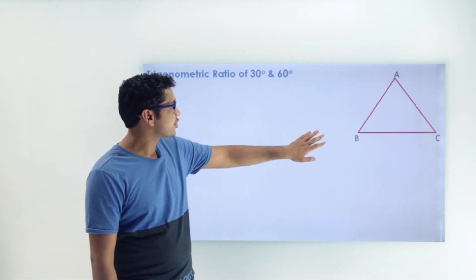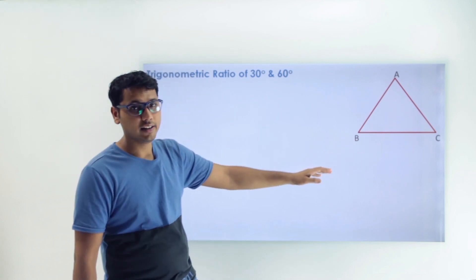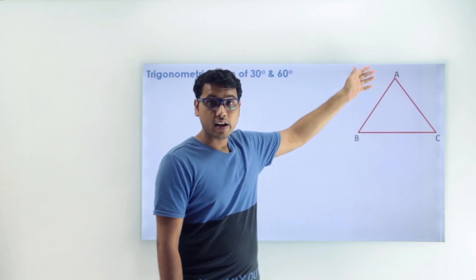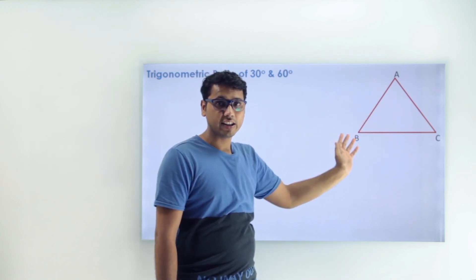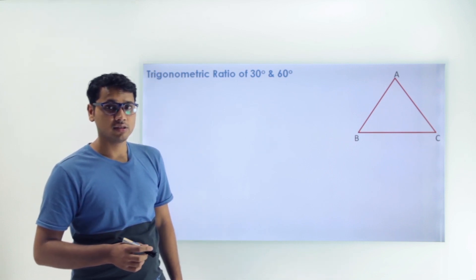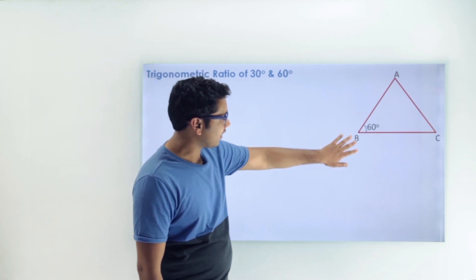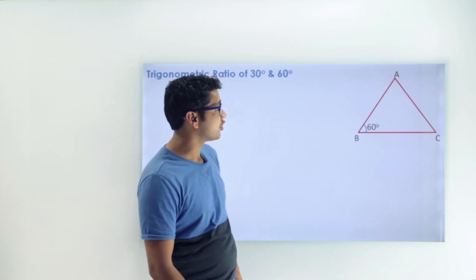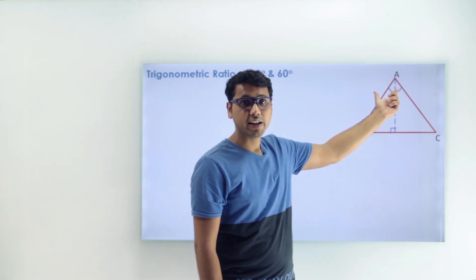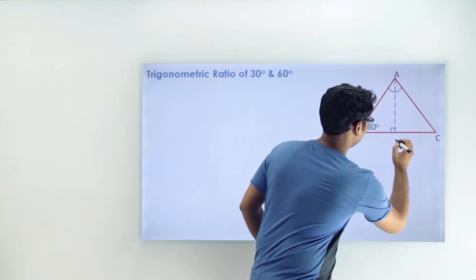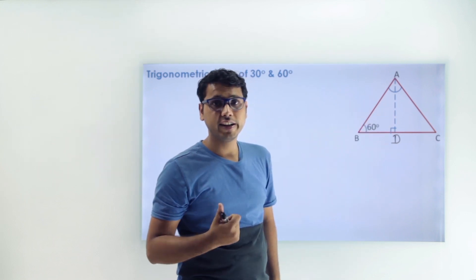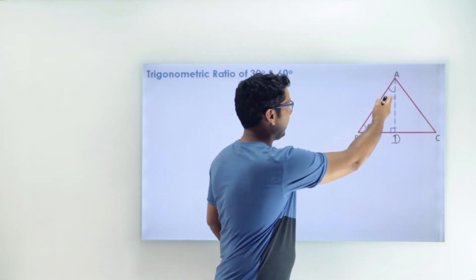In an equilateral triangle all angles are 60 degrees, and if we make a construction — a median, an angle bisector, or an altitude — it will bisect the top angle into two parts of 30 degrees and 30 degrees. So if we draw a perpendicular from A, it bisects angle A into 30 degrees and 30 degrees, marking the foot as point D.